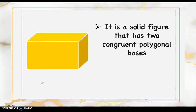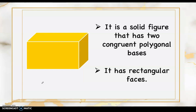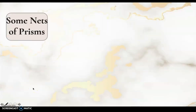Good day everyone. Let's start our lesson by recalling and describing prisms. A prism is a solid figure that has two congruent polygonal bases and rectangular faces. The name of the prism depends on the shape of its base. In this figure it is called a square prism since the bases are square. The number of rectangular faces also depends on the number of sides of the base, so this square prism has four rectangular faces.